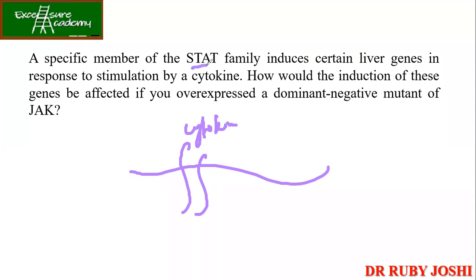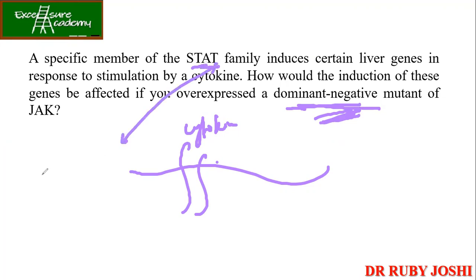Now if you have a dominant negative mutant of JAK, it is going to inhibit STAT activation and block gene expression. Dominant negative means the mutant binds the receptor but is not able to induce any cell signaling. So it inhibits STAT activation, and once there is no STAT activation, there won't be any gene expression.